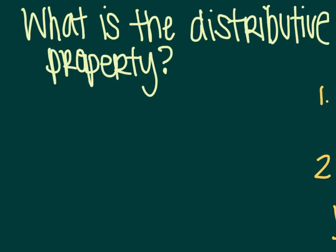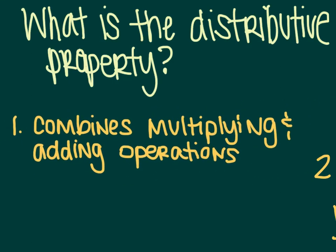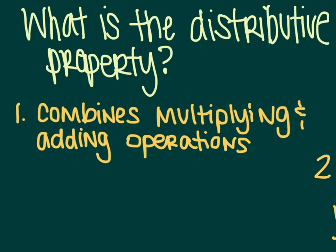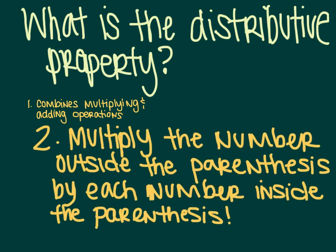What is the distributive property? Before you can do anything, you have to know what it is. First of all, it combines multiplying and adding operations. So you're going to be doing both of those things. More importantly, it's when you multiply the number outside the parentheses by each number inside the parentheses. The key thing here is that each number inside parentheses is being multiplied by the number outside. The big word here is each because you will have a tendency to forget.